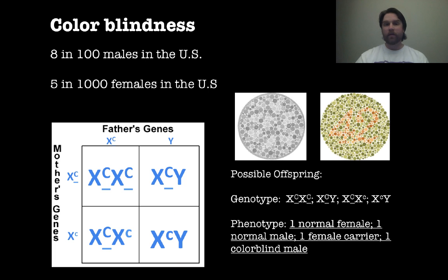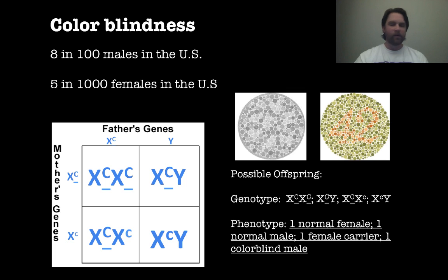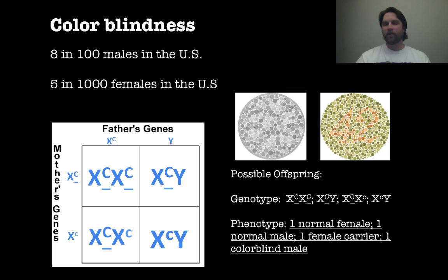The incidence of colorblindness is 8 in every 100 males in the U.S. — that's 8%. Only 5 in 1,000 females are affected, which is much, much smaller. There's a Punnett square showing what we saw previously, along with a couple of the standard tests for colorblindness. If you can see the number in the middle of the one on the right, you are definitely not red-green colorblind.